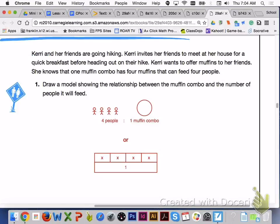Here are two examples of what your models could look like showing the relationship between the muffin combo and the number of people that it will feed. Please note that in both models, there are four people to one muffin combo.